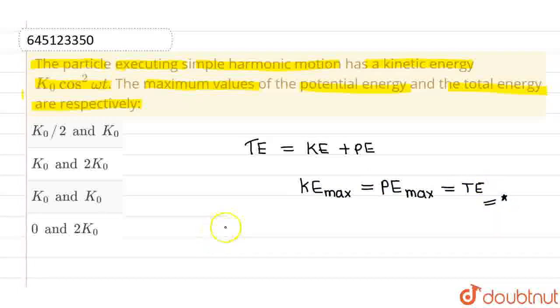Since the kinetic energy is given as k0 into cos square omega t, and we also know that the maximum value of kinetic energy comes out to be maximum kinetic energy equals k0 into maximum value of cos square omega t, which is 1. So, overall, we will be getting maximum kinetic energy as k0.